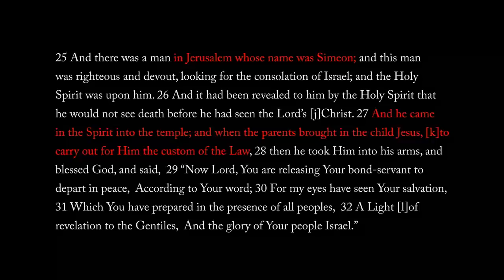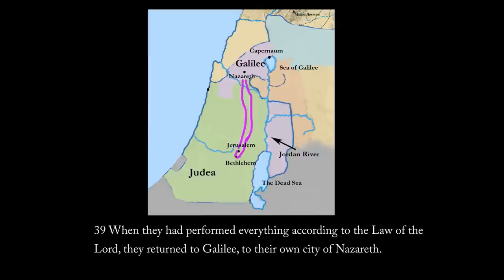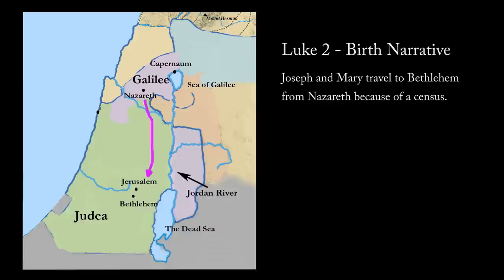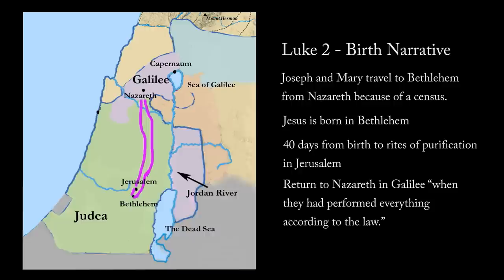Luke continues with the account of two conversations at the temple — one with an elder man, Simeon, and the other with a temple servant named Anna — and then concludes chapter 2 in verse 39: 'When they had performed everything according to the law of the Lord, they returned to Galilee, to their own city of Nazareth.' To reiterate Luke's account: Joseph and Mary travel to Bethlehem from Nazareth because of a census, Jesus is born there, there are 40 days until the ritual sacrifice, and then they returned to Nazareth. This timeline is important when comparing this account with the Matthaean account.